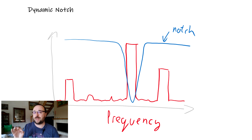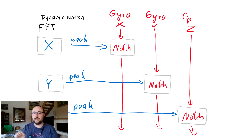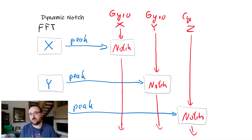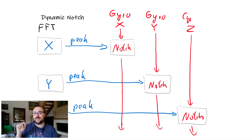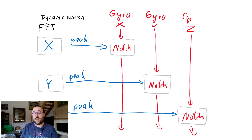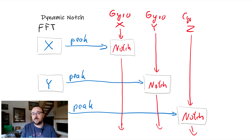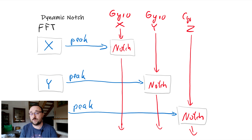Then comes the slight difference. With the standard dynamic notches — standard dynamic gyro filters — if for example a peak frequency of 150 Hz is found on the x-axis, on the x-gyro trace, then a dynamic notch with the center frequency at 150 Hz is placed on the x-axis. And if for example a 200 Hz peak is found on the y-axis, the notch filter at 200 Hz is placed on the y-axis. So we found something here, we apply something here, and this is more or less working.